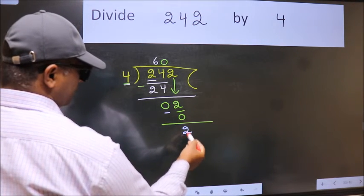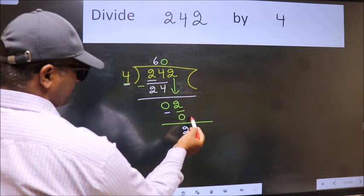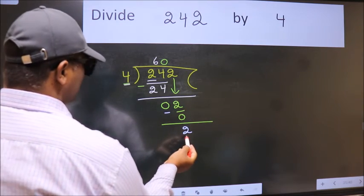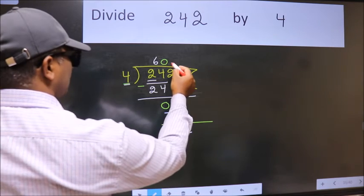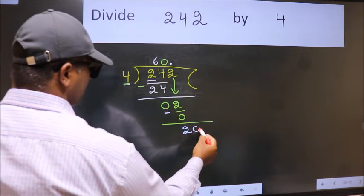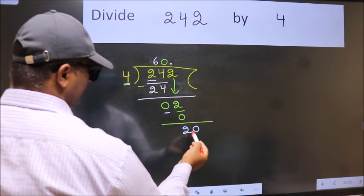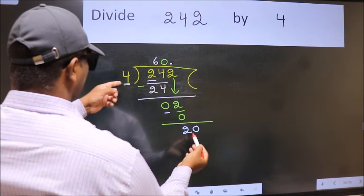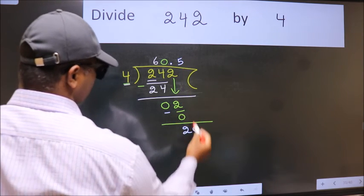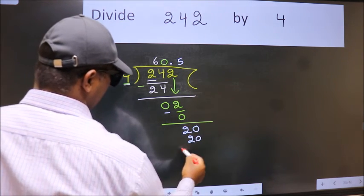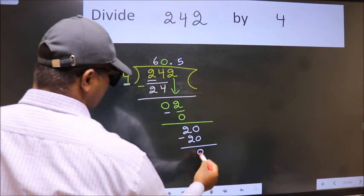Over here, we did not bring any number down, and 2 is smaller than 4. So now we can put dot and take 0. So 20. When do we get 20 in the 4 table? Now we subtract. We get 0.